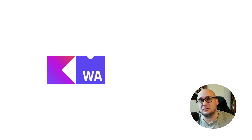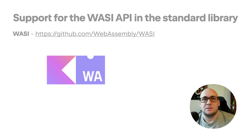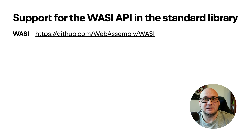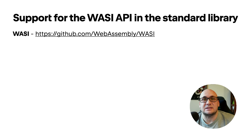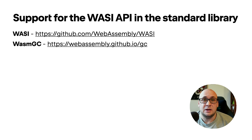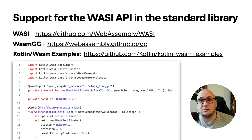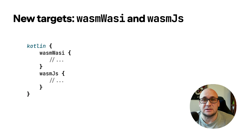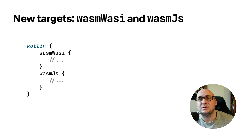WebAssembly support in Kotlin is in its early stages, but there is interesting progress. In this release, we included support for WASI — a system interface for the WebAssembly platform. WASI support makes it easier to use Kotlin WASM outside of browsers, for example in server-side applications, by offering a standardized set of APIs for accessing system resources. To run Kotlin WASM applications, you need a VM that supports WASM GC, such as Node.js or Deno. We also updated the Gradle DSL — there is a new WASM WASI target, and the former WASM target is now renamed to WASM JS.